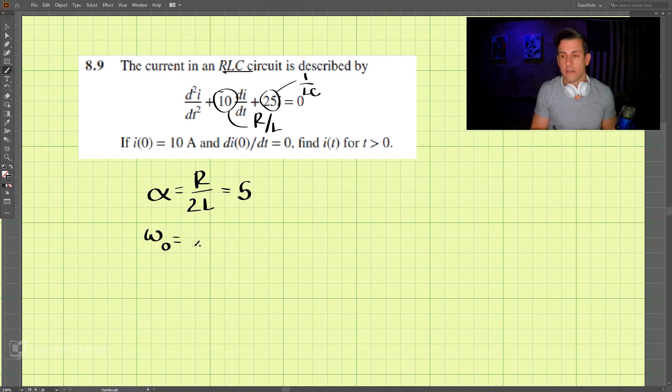And then our omega_0 is equal to 1 divided by the square root of L times C. Well, if we know 1 over LC is equal to 25, then 1 over the square root of LC should be equal to 1 divided by the square root of LC. I'm sorry, that should be the square root of 25, which is equal to 5.